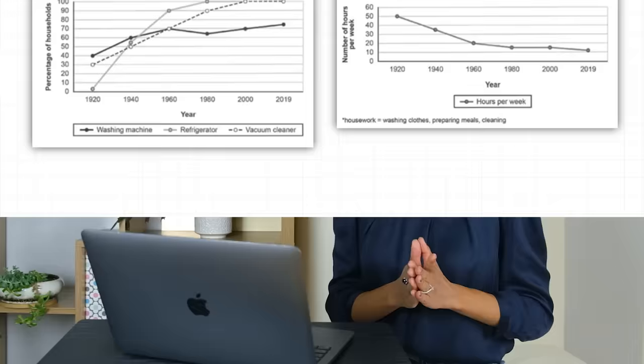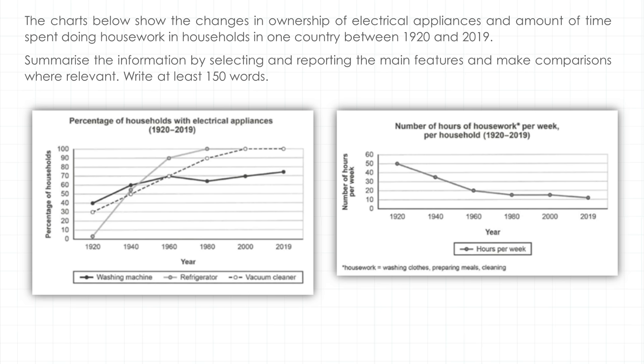Let's take an example from Cambridge IELTS 16. The charts below show the changes in ownership of electrical appliances and amount of time spent doing housework in households in one country between 1920 and 2019.